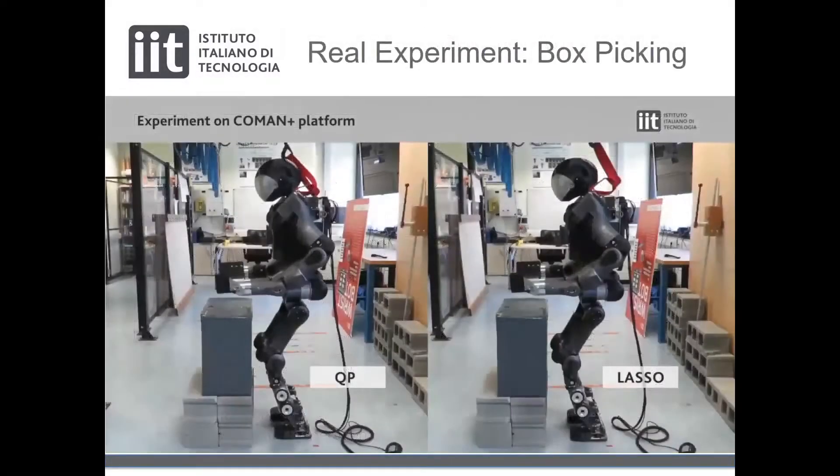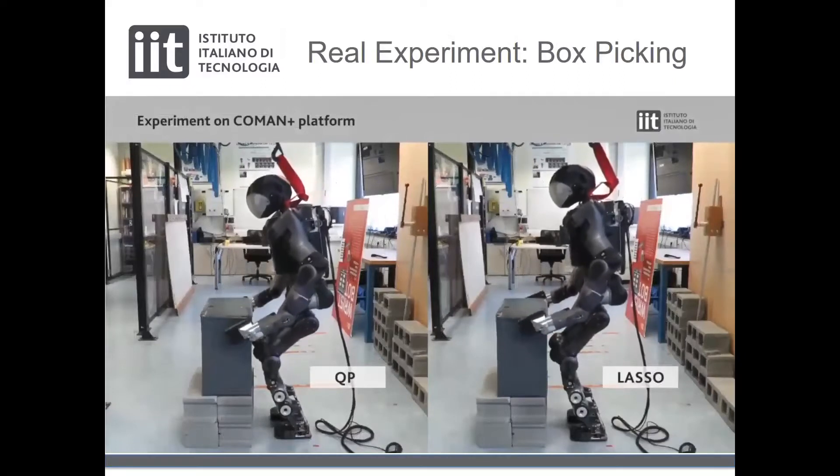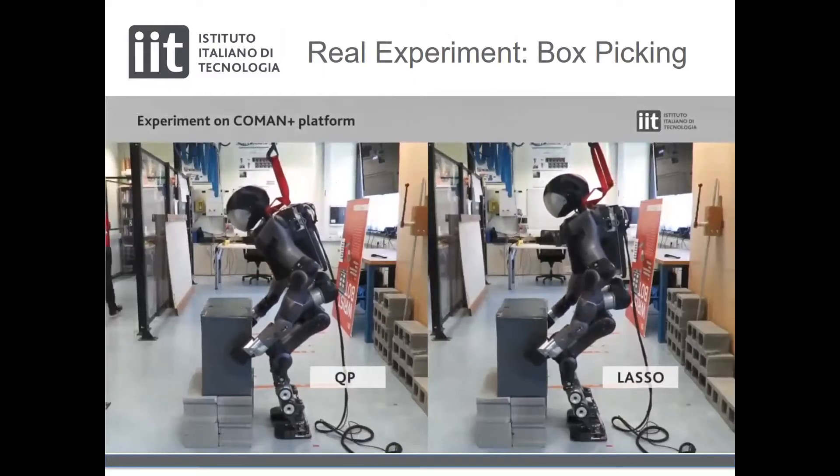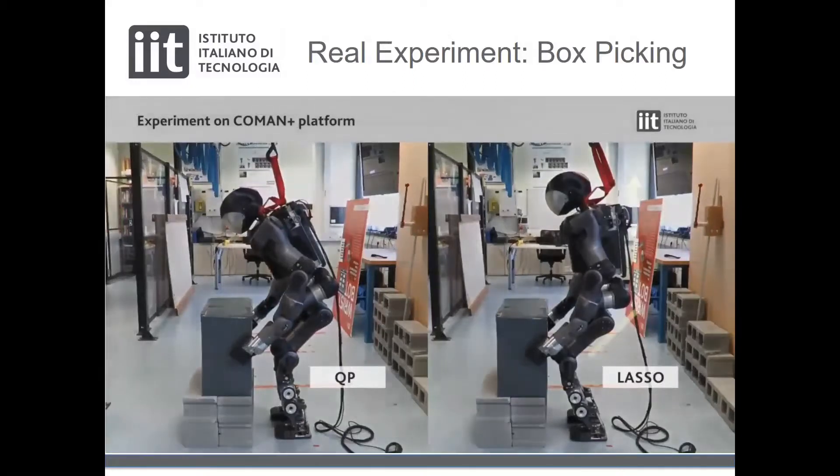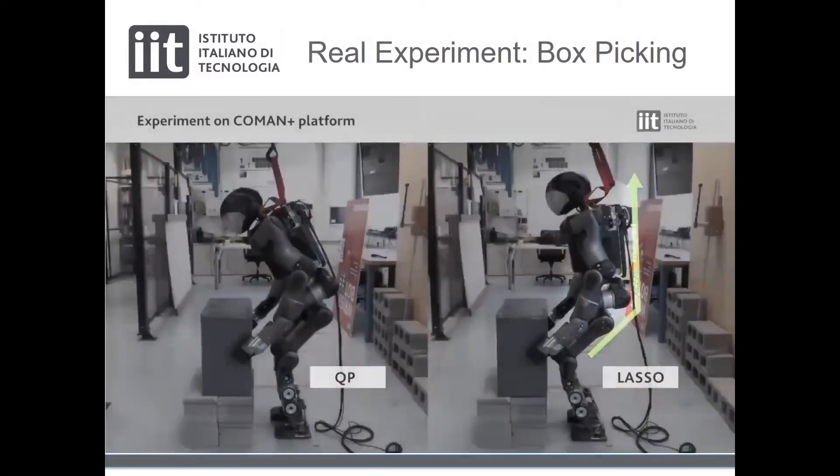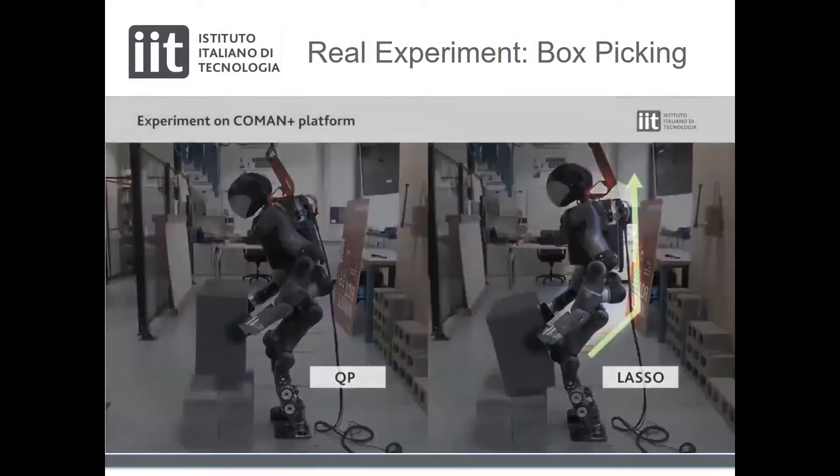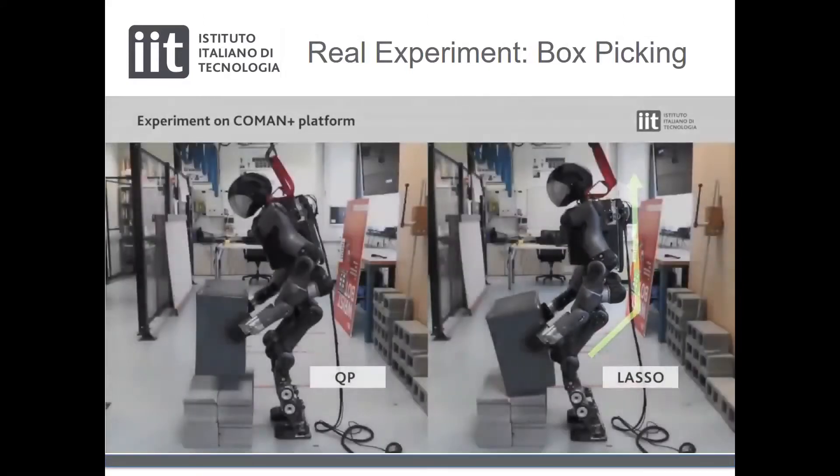We now see the final experiment comparing the L2 norm solution on the left and the LASSO sparse approach on the right. It's worth pointing out how significantly the resulting whole body motion changes based on the employment of the IK algorithm. As a matter of fact, the LASSO-based IK produces a motion which tends to move initially the arms and subsequently the knees, keeping a straight torso and ergonomic waist position while picking the box.